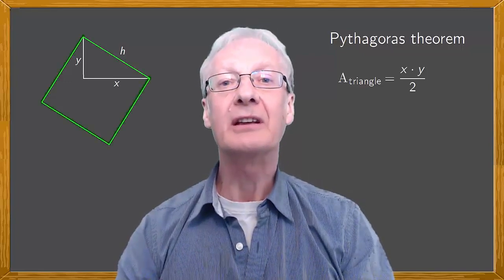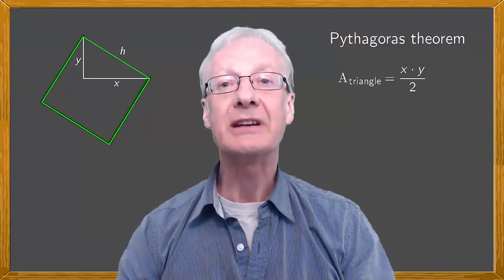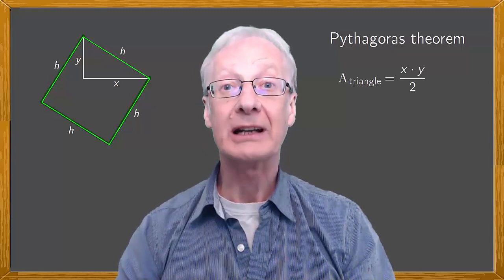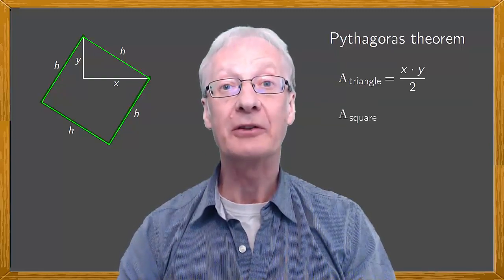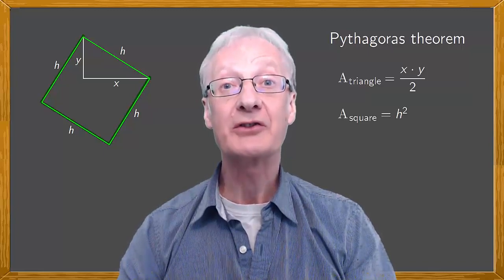As we've said, the length of each of these sides is h. So clearly, we've just made a square of side h. The area of this square is h squared.